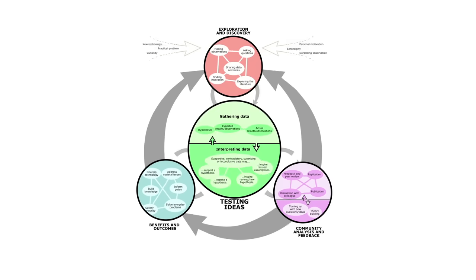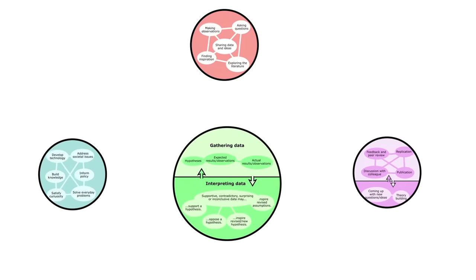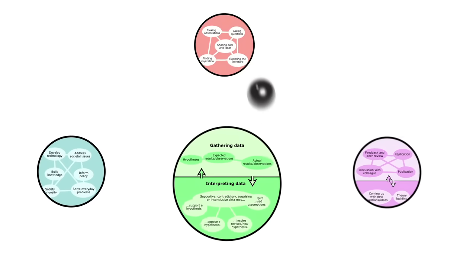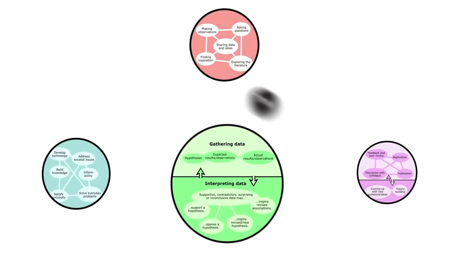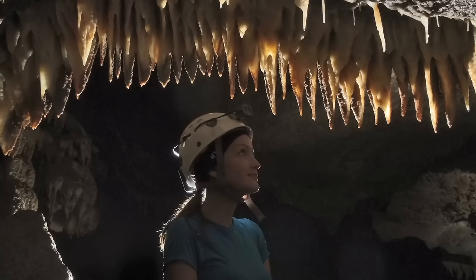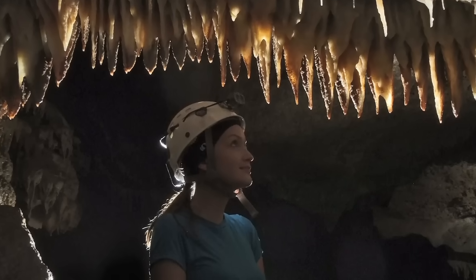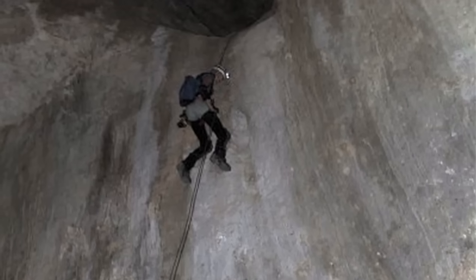So let's take a look at the trogoraptor discovery flowchart. It's less like a linear process and more like a pinball machine. Let's follow the path using the spider that the citizen scientists found as the pinball. They sent it to scientist Tracy Audizio, who is very curious about what lives in caves.